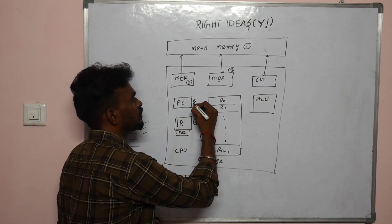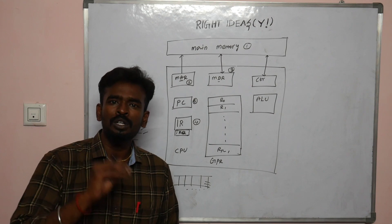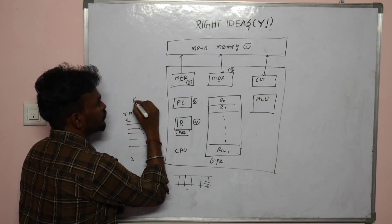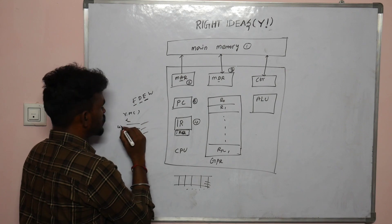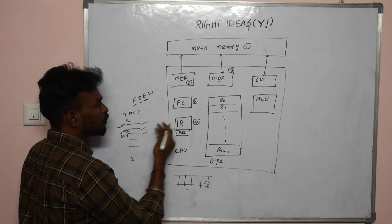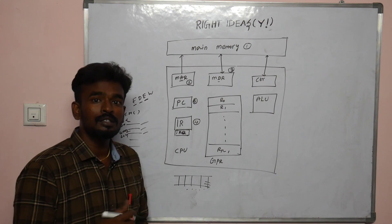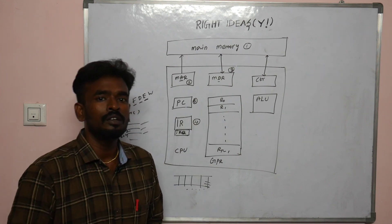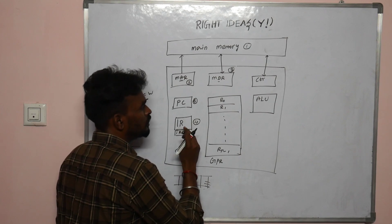PC — Program Counter — is important. The Program Counter is a special register which is used to store the address of the next instruction while the current instruction is being executed. In the Fetch-Decode-Execute cycle, the first instruction is executed. In the program counter, the address is 400. After execution, the program counter updates to 404, then 410, and so on — one by one, loading from the instruction queue.